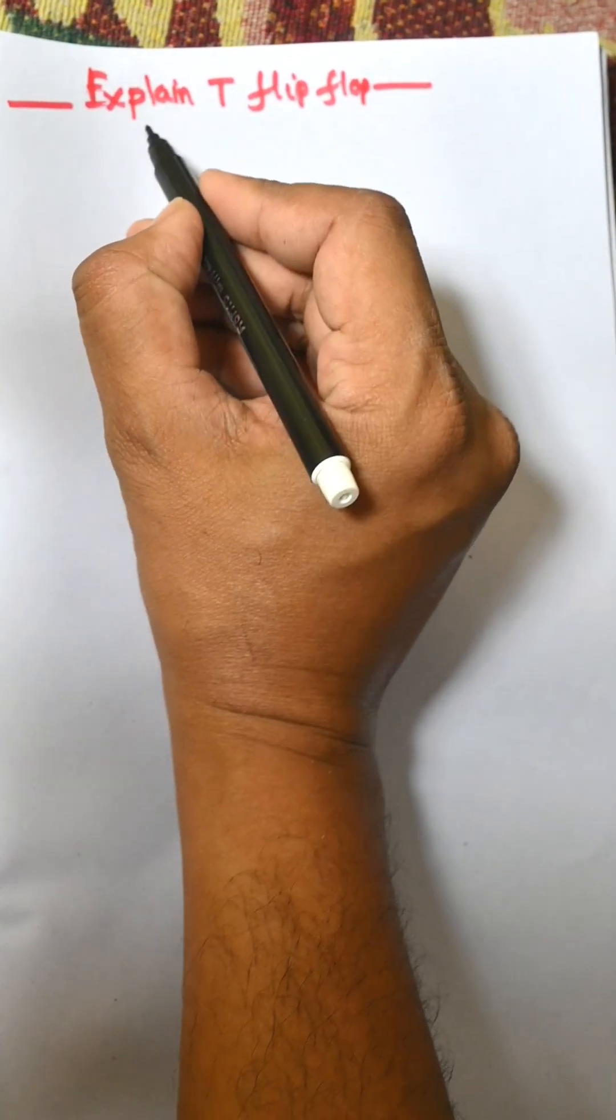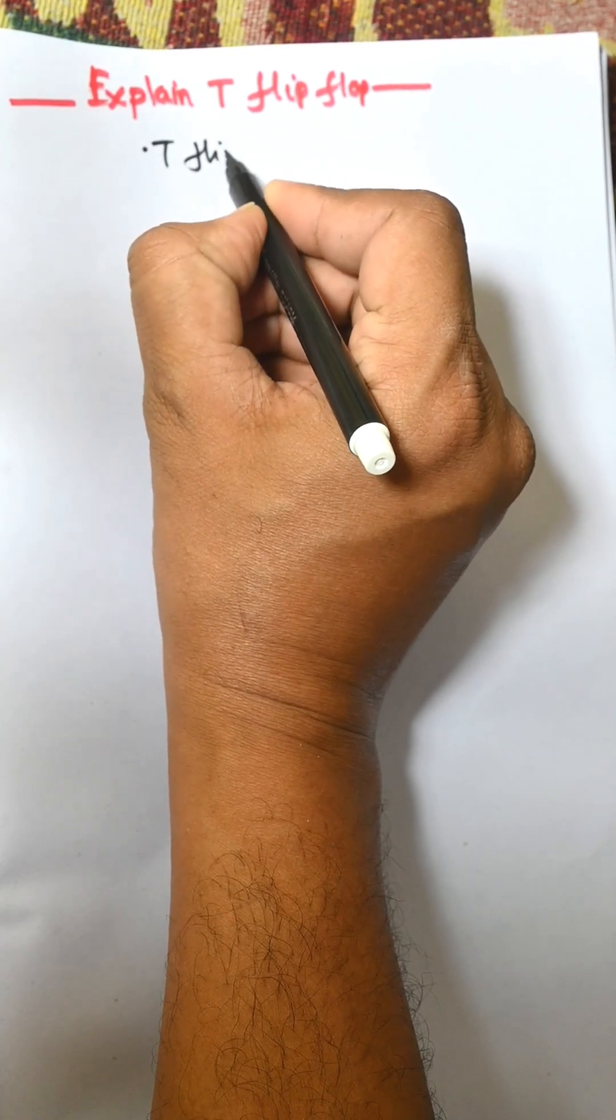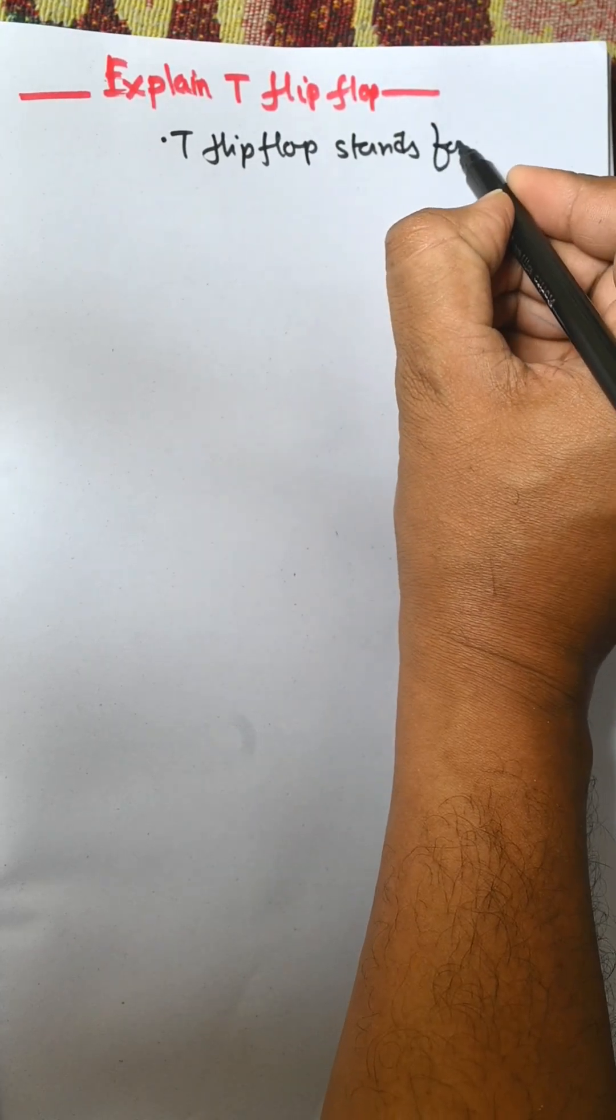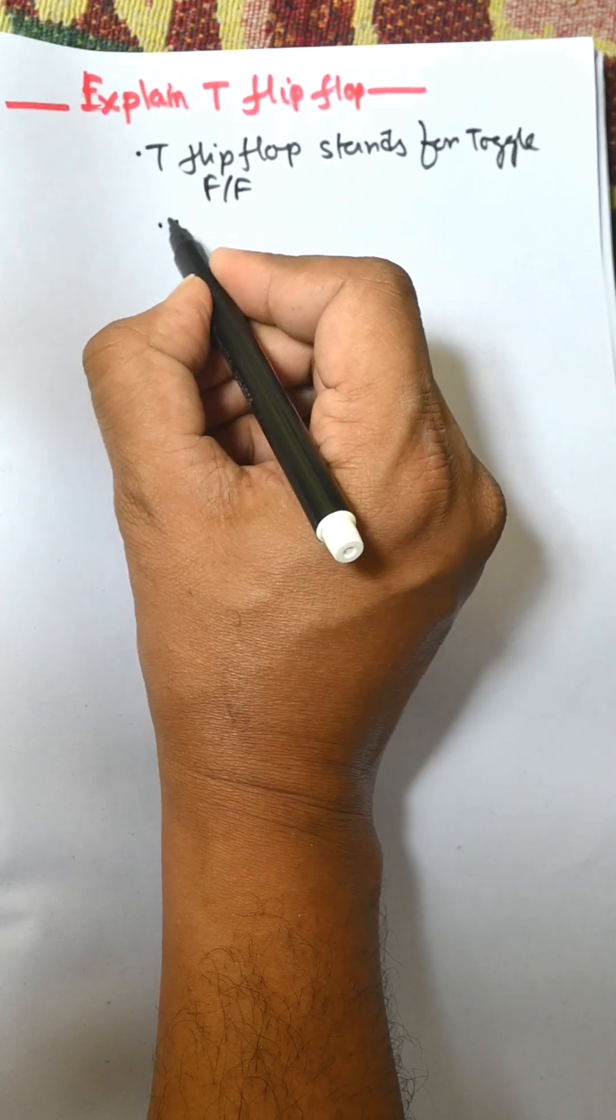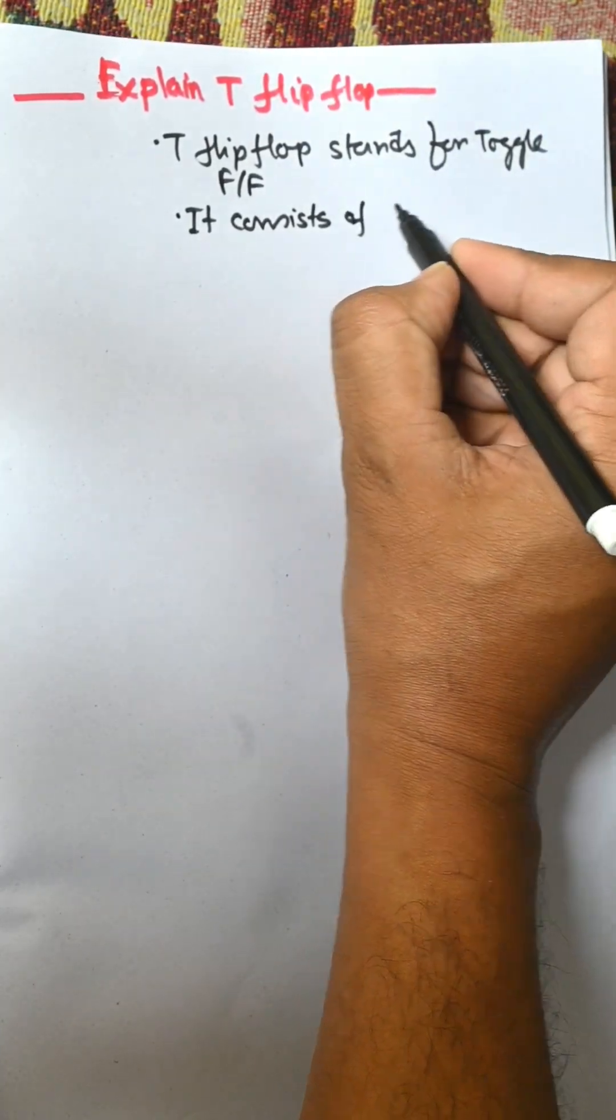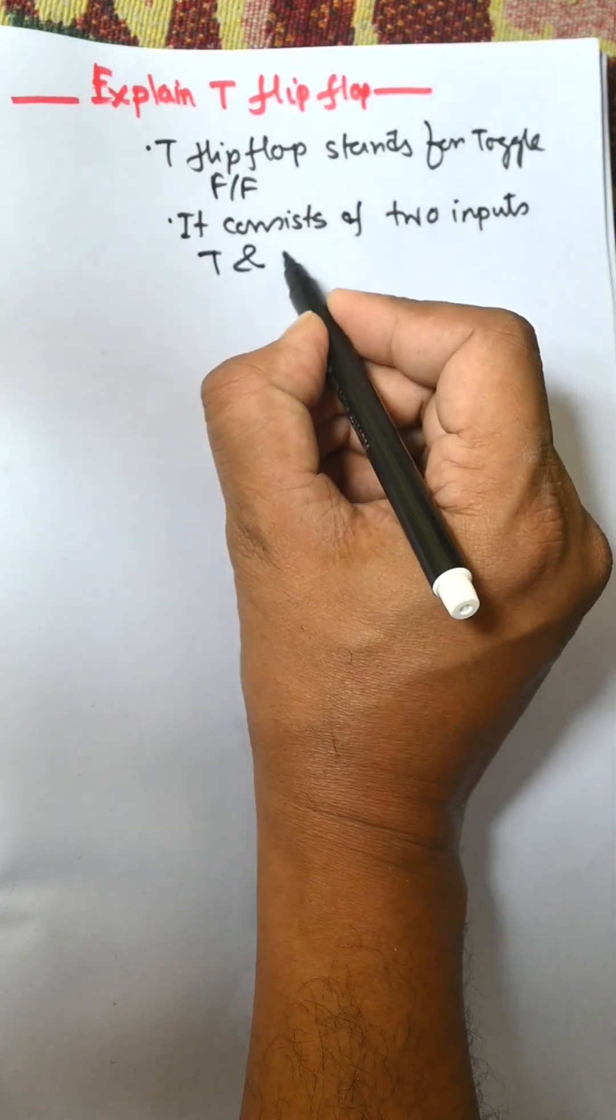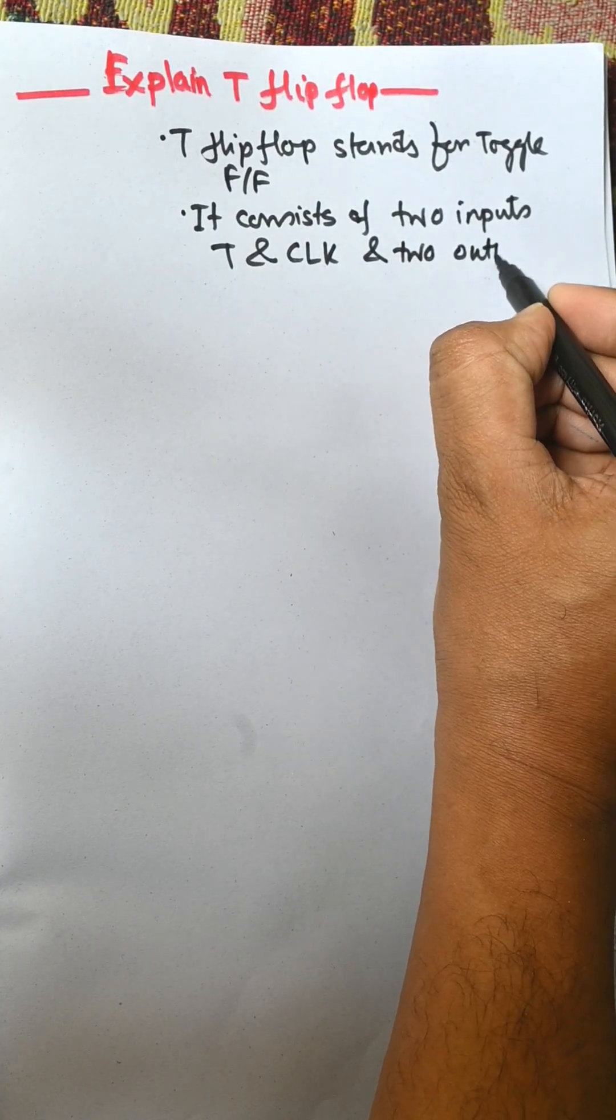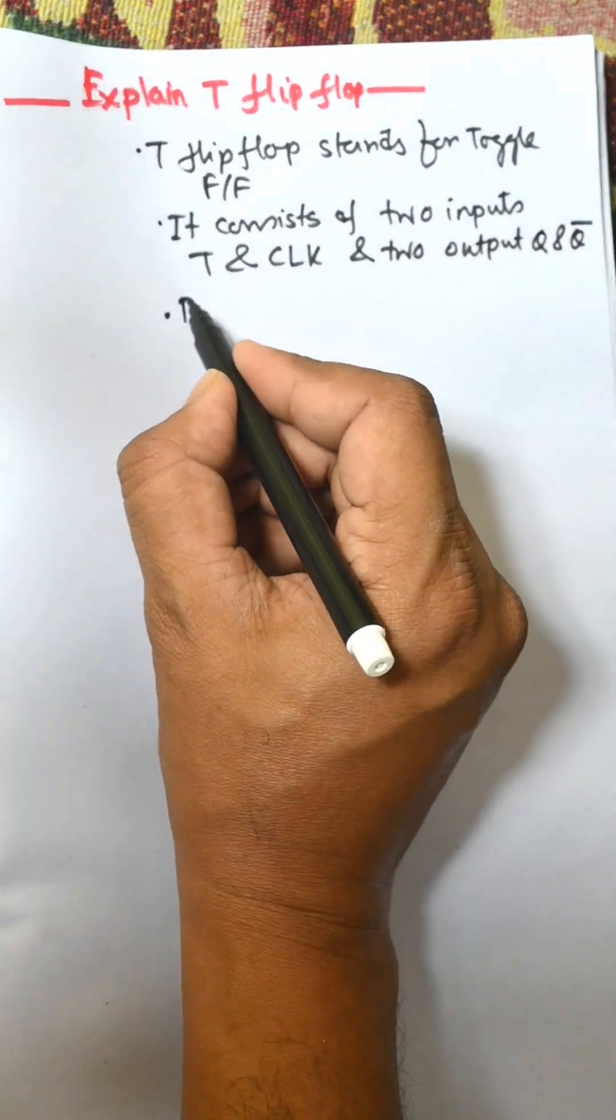In this video I am going to discuss T flip-flop. T flip-flop stands for Toggle flip-flop. It consists of two inputs: T and CLK, and two outputs: Q and Q̄.